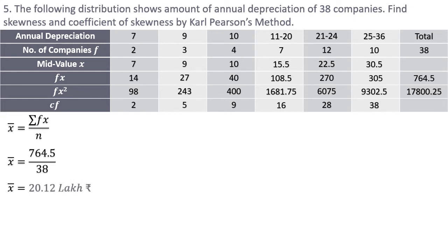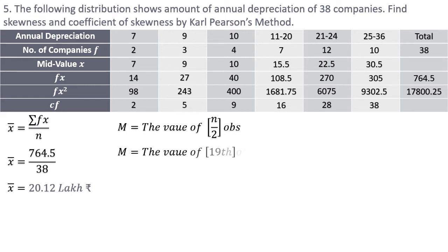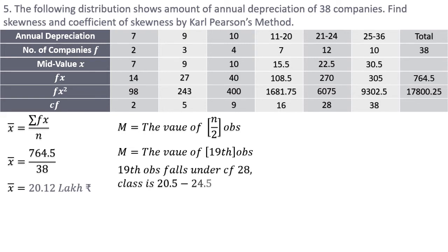The mean is 20.12 lakh rupees. Next I need to calculate median. For a mixed frequency distribution, I use n/2 — no plus 1. n is 38, so the 19th observation. Looking at the cumulative frequency column, the 19th observation falls under cf 28, and cf 28 belongs to the class 21 to 24.